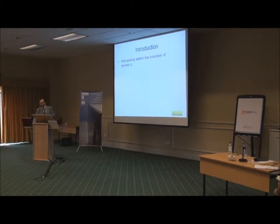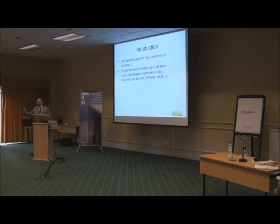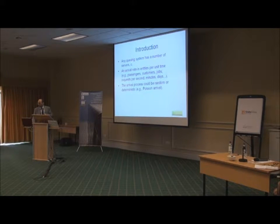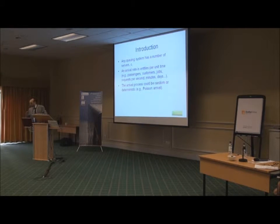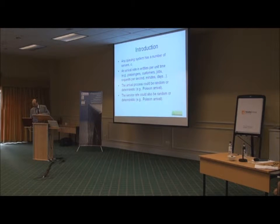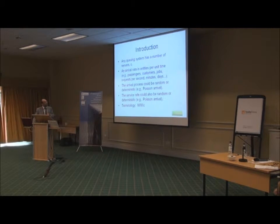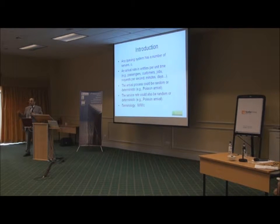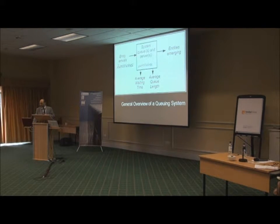Any queuing system has a number of servers C, arrival rate, and entities. We call them entities because they're not necessarily passengers — this is the generic term. The arrival process could be random, but we know reasonably well that it's a Poisson arrival in our case, or exponential for the inter-arrival time. The service rate could also be random or deterministic. In our case it's not necessarily Poisson, but there have been theories about what it is in terms of the service or processing rate. MMC is actually a Poisson arrival, Poisson servicing, C servers — which in our case would translate into lifts or elevators.